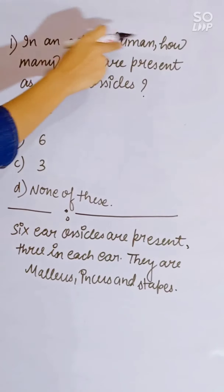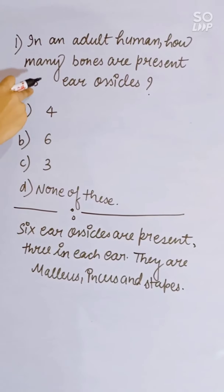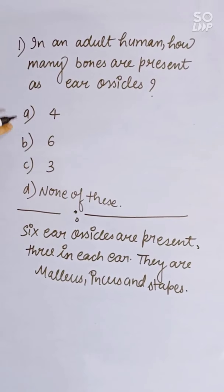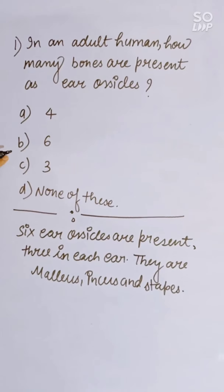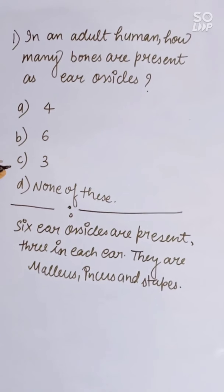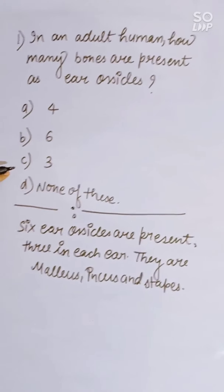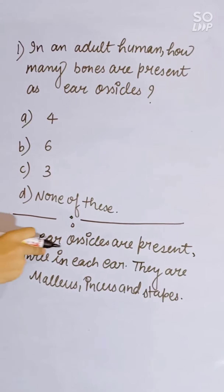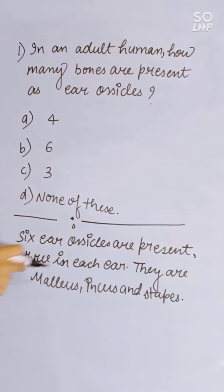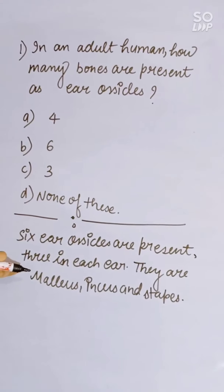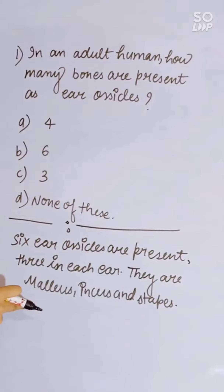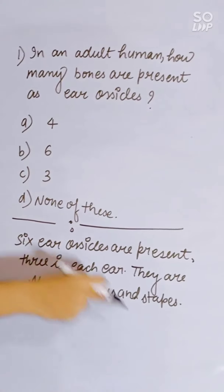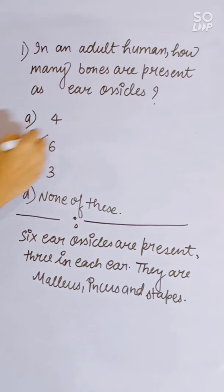In an adult human, how many bones are present as ear ossicles? Options: 4, 6, 3, or none of these. Six ear ossicles are present, three in each ear — malleus, incus, and stapes. Correct answer is B, six.